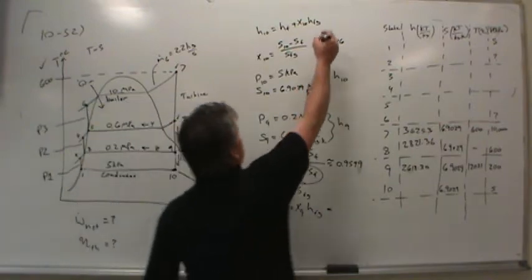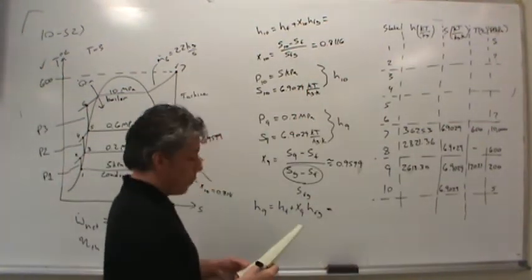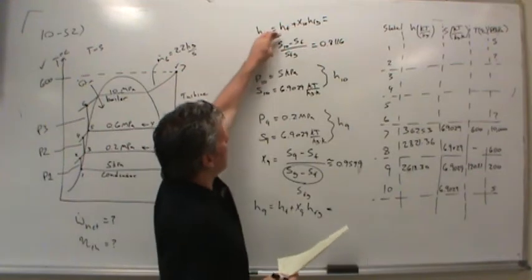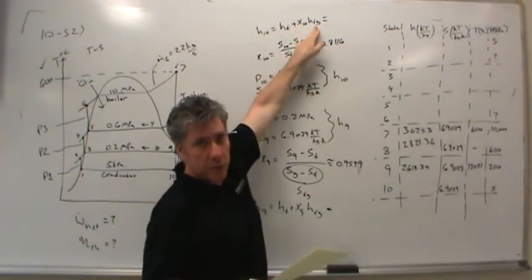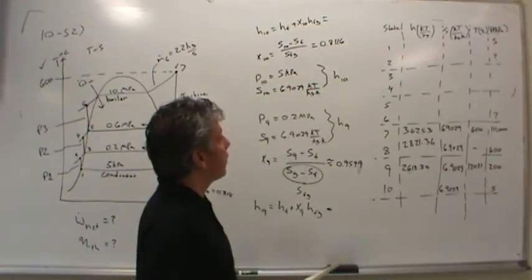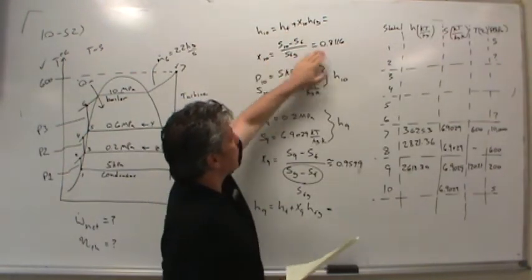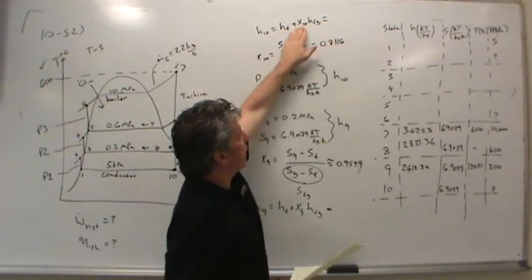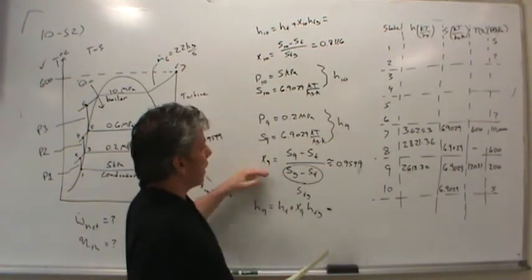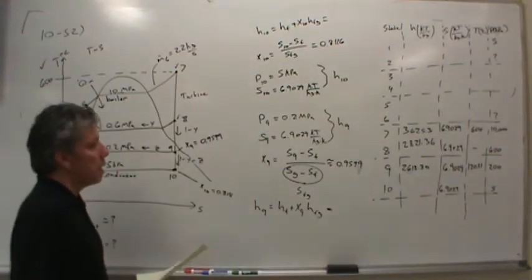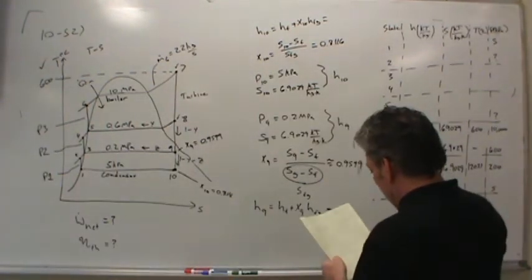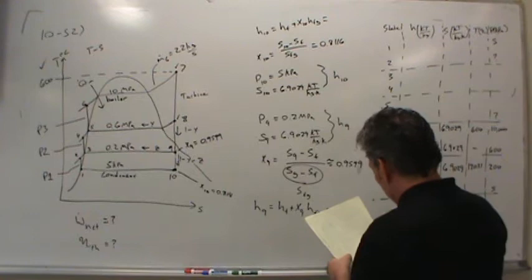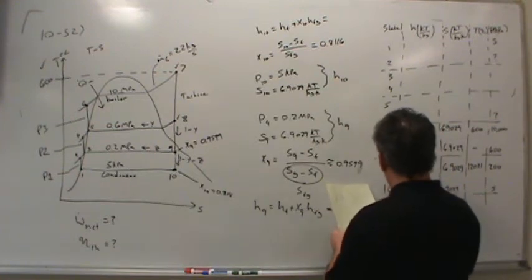I won't plug in the numbers for you on the board, but you would look up the enthalpy of saturated liquid at 5 kilopascals, and the difference between the enthalpy of saturated liquid and vapor at 5 kilopascals, plug it into the equation with the appropriate quality. We've got two different qualities at two different states, 9 and 10, and you'll find the enthalpy in state 10. When I did that, I found that the enthalpy in state 10 was about 2,104.89.